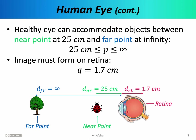A healthy human eye must always form images on the retina, which is approximately 1.7 centimeters away from the lens. This is essentially the size of the human eye and is not something you can control. From an optics point of view, we say that Q, the image distance, must be 1.7 centimeters. And for a healthy eye, P, the object distance, must range from 25 centimeters to infinity.